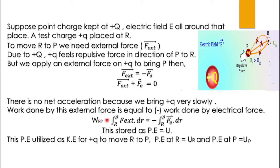Work done by the external force is equal to minus work done by the electrical force. The work done in bringing the charge from R to P, by the external force, is equal to negative of work done by Fe. Integrating both sides from R to P, this energy stored is potential energy, represented as U. This potential energy is utilized as kinetic energy for plus q to move from R to P.